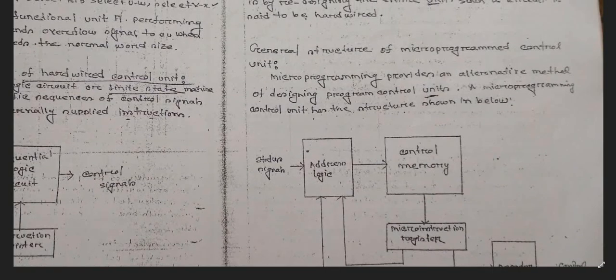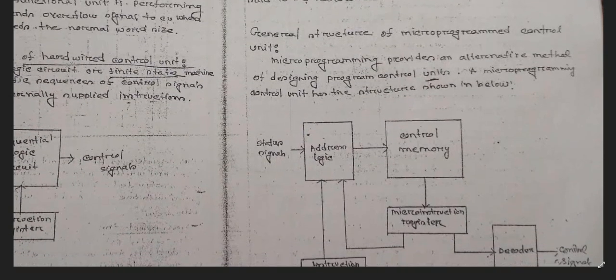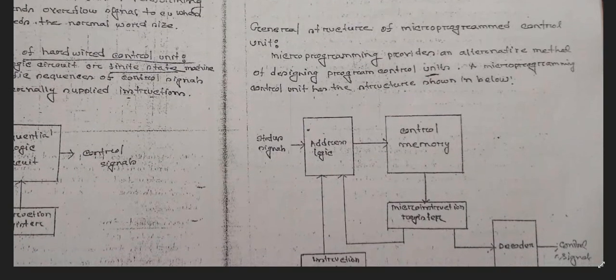Here we have the general structure of the microprocessor control unit. We have the control memory which is connected with address logic in a unidirectional section, and this address logic is connected with the status signal. The instruction registers give input to the address logic, and the microstructure of resistors also gives input to the address logic and to the decoder. Finally a control signal is generated. That is how the general structure of the microprocessor control unit works.